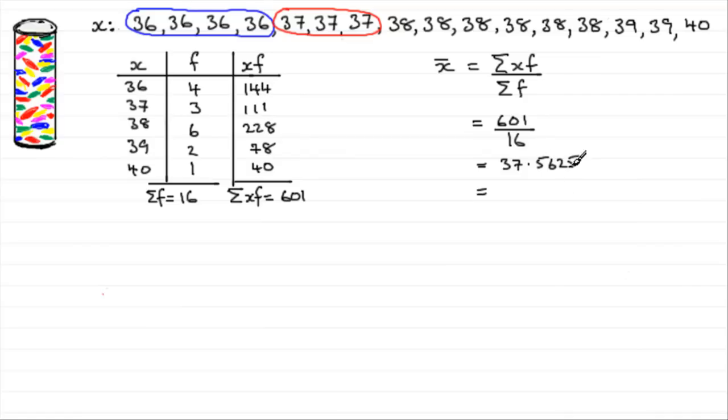Well, you can't really have that value. Let's just approximate it. Let's say it's 37.6 to 3 significant figures, 3SF. Now, this was an example on discrete data where we had the actual values.